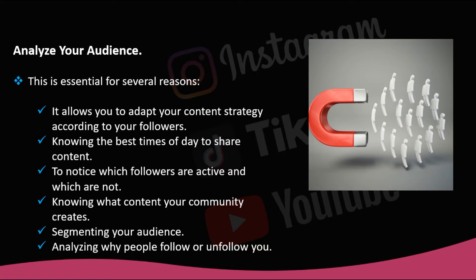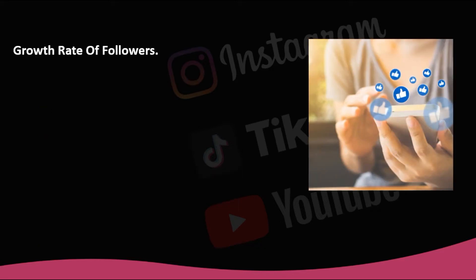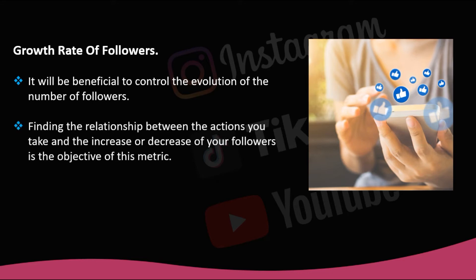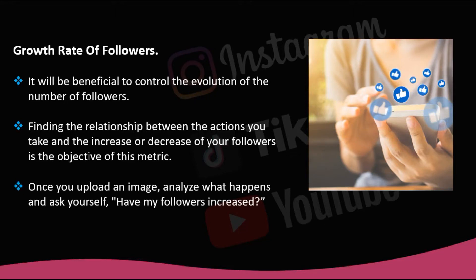But how? The answer is simple: by analyzing Instagram's profile metrics. First, the growth rate of followers. If you consider that social networks are platforms for social interaction, this metric will not be the most important of all, but it will be beneficial to control the evolution of your follower count. Although it is not a determinant, it will give you a good idea of how effective your strategy is being. Finding the relationship between the actions you take and the increase or decrease of your followers is the objective of this metric. Once you upload an image, analyze what happens: have my followers increased? What content did you publish when too many people decided to stop following you?